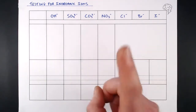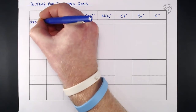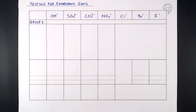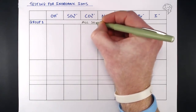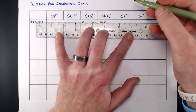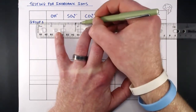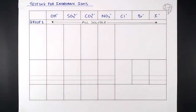We're going to start with Group 1. Group 1 is nice and easy — it's the easiest one to remember — because they're all soluble. You are never going to get a precipitate of sodium something, potassium something. Anything in Group 1 — sodium hydroxide, potassium carbonate, lithium chloride — they're all soluble. If you're ever combining a Group 1 ion with something, it's never going to give you a precipitate.